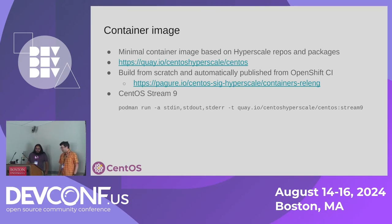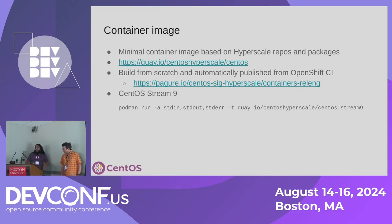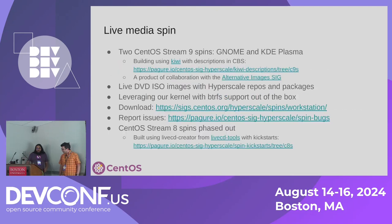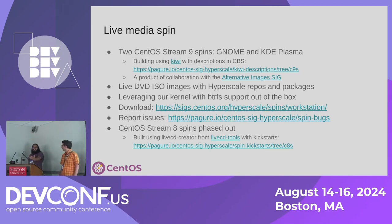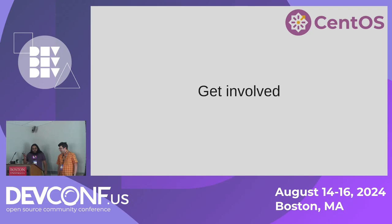We have a container image you can play with, though the automation to build containers is currently broken and we're looking for someone who knows OpenShift to help fix it. We'd like to have it working for CentOS Stream 10. We also have live media — the Hyperscale spin — with cloud images being worked on. The live media lets you try everything we're working on all at once: virtualization integrated, systemd integrated, RPM CoW, Btrfs on by default with Zstandard compression, and all the features we've pulled from Fedora and contributed to, packaged up in a usable form.